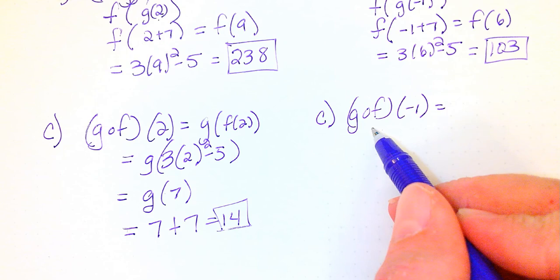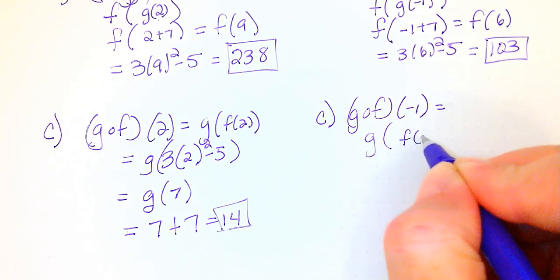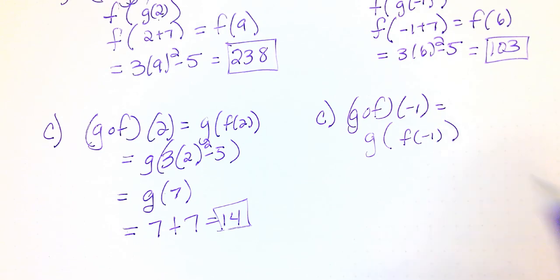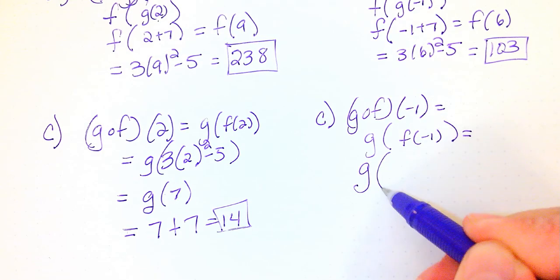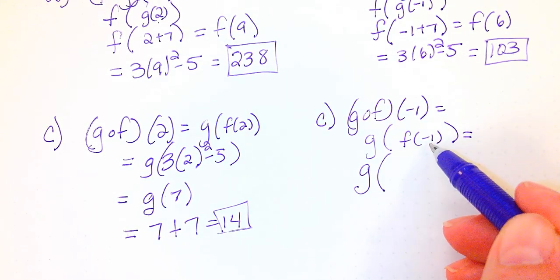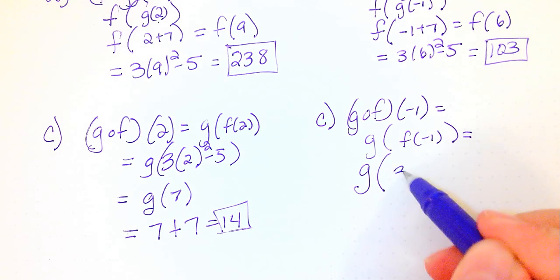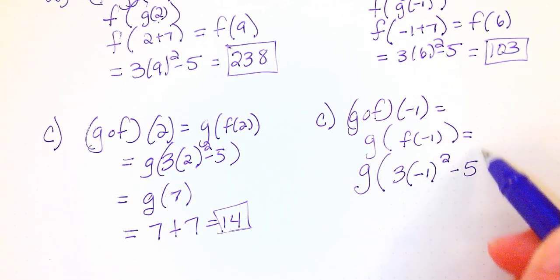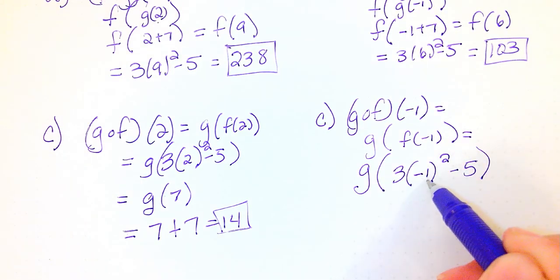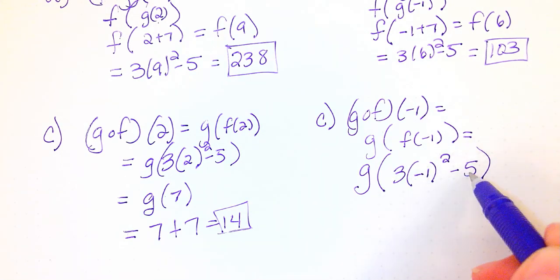And then let's see what happens when I do the same thing here. I've got g of f of negative 1. Be very careful when plugging in negative 1s, especially with exponents. So I'm going to take the g and leave it on the outside. And I'm taking negative 1 and plugging it into 3x squared minus 5. This is going to be 3x, in this case is negative 1 squared minus 5. So negative 1 squared is actually just 1 and 1 times 3 is 3 and 3 minus 5 is negative 2.